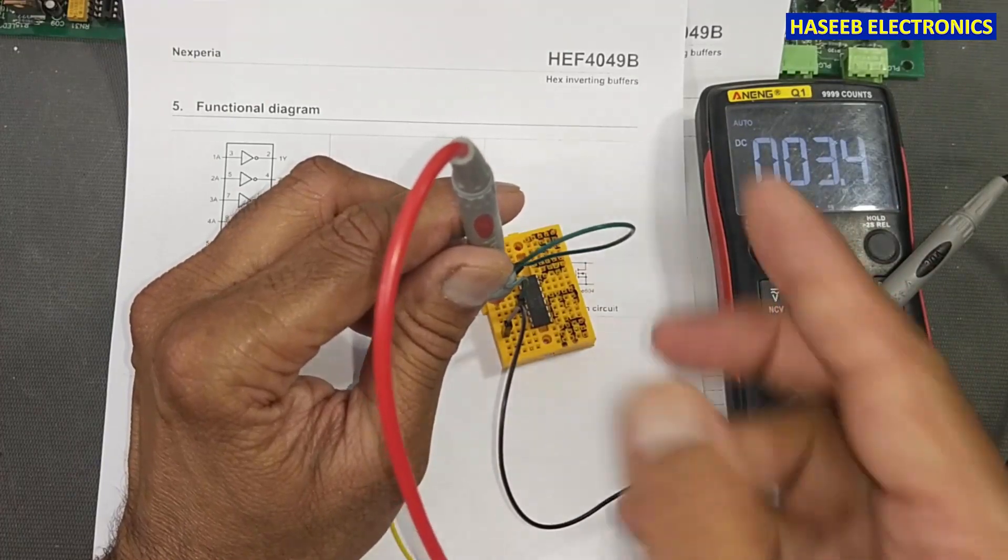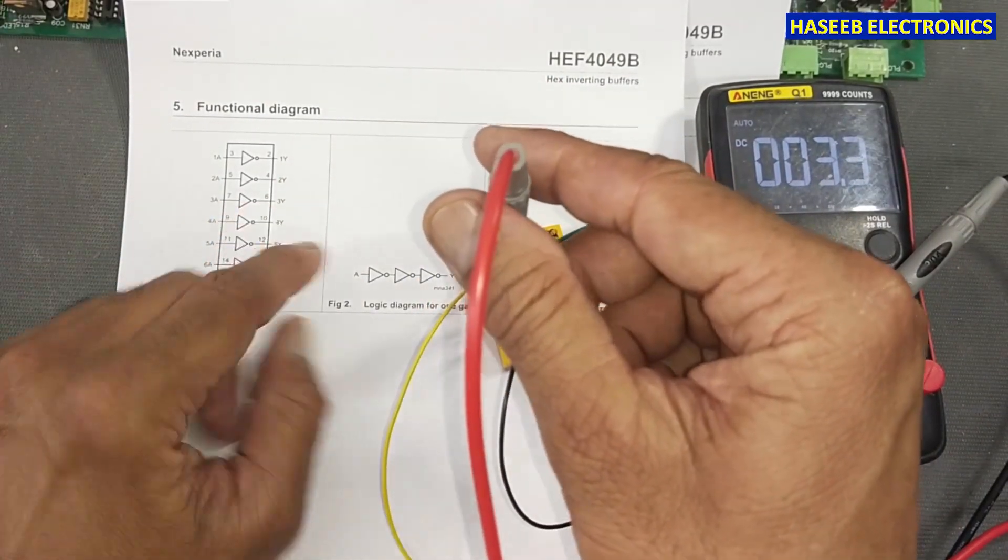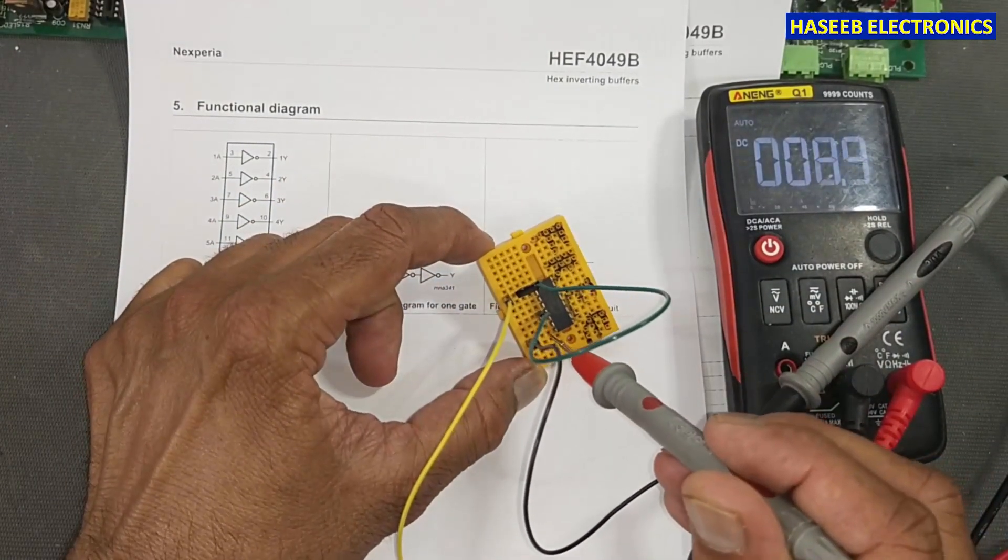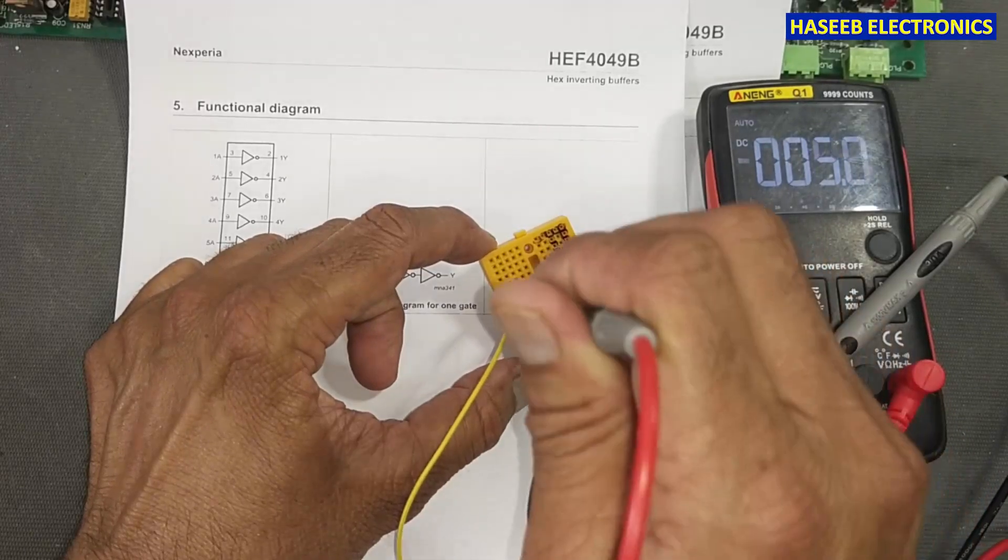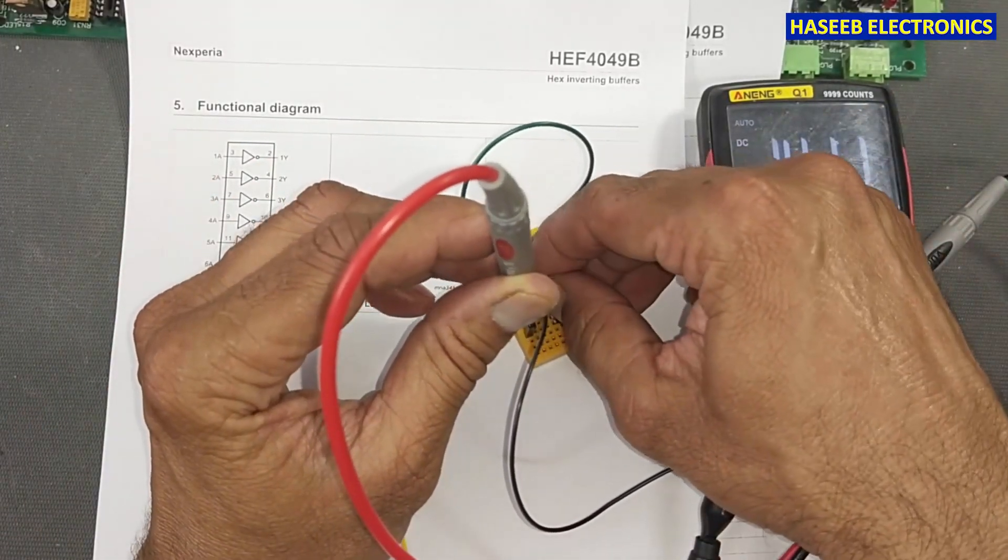Now I will connect to pin 6. Pin 6 is here, this is the output. Pin 6 is output. Now I will connect to pin 7, the input.